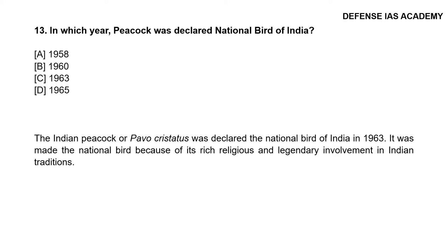Question 13: In which year was the peacock declared National Bird of India? The correct answer is option C, 1963. The Indian peacock, or Pavo cristatus, was declared the National Bird of India in 1963. It was made the National Bird because of its rich religious and legendary involvement in Indian traditions.